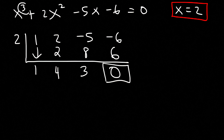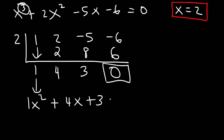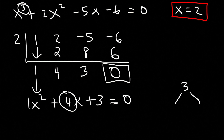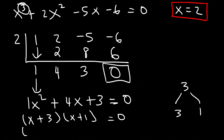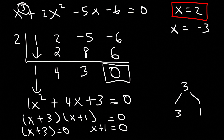Since we started with x³, the result is associated with x², giving us x² + 4x + 3 = 0. We need to factor this: what two numbers multiply to 3 and add to 4? That's 3 and 1. So factoring gives (x + 3)(x + 1) = 0. Setting each factor equal to 0, we get x = -3 and x = -1 as the two other answers.